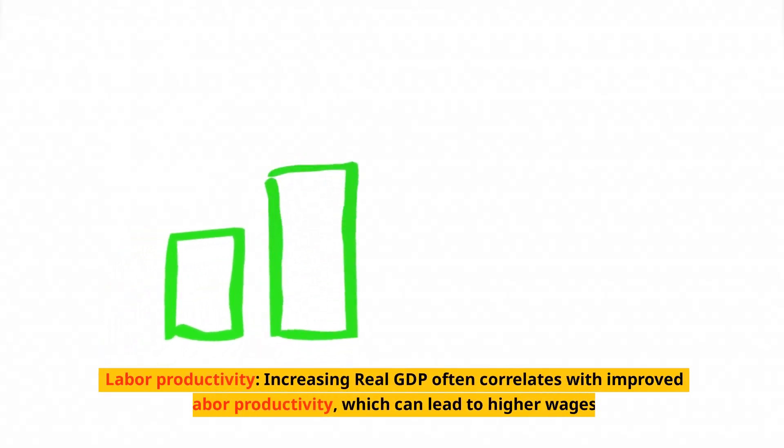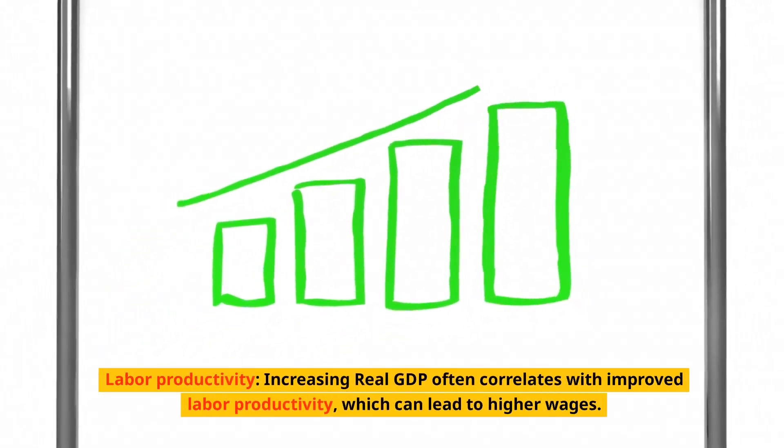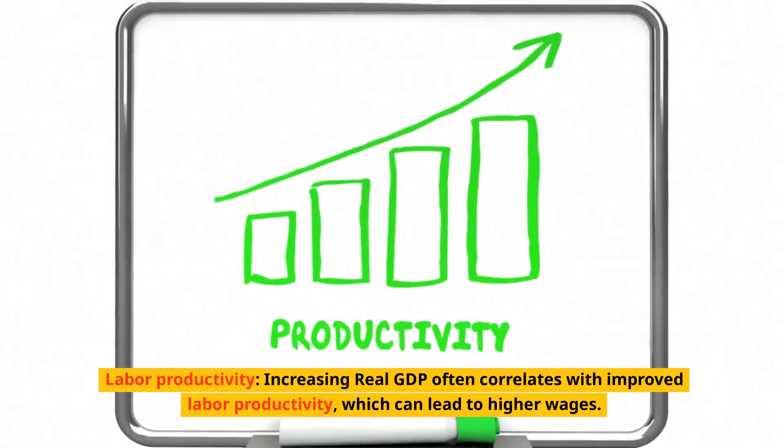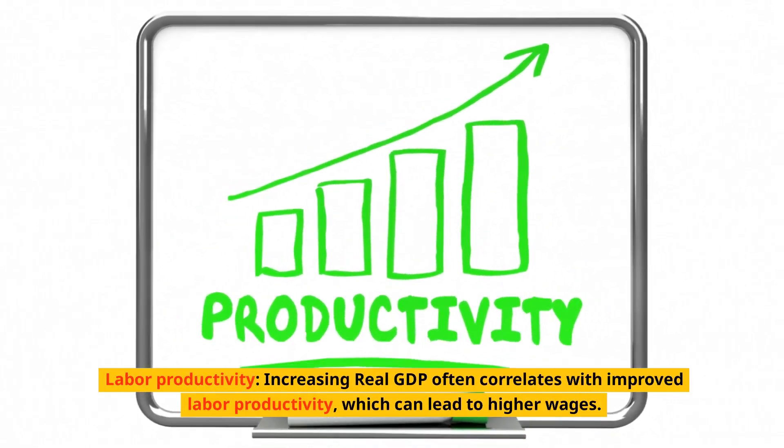Labor Productivity: increasing real GDP often correlates with improved labor productivity, which can lead to higher wages.